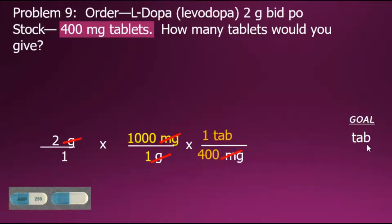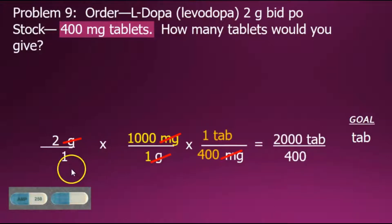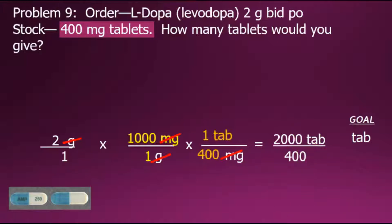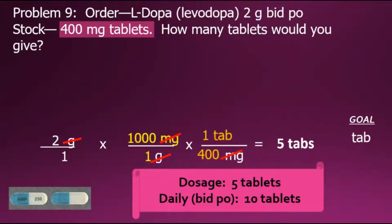Now we can do the indicated multiplication by multiplying the numerators of each fraction together for the new numerator, and the denominators together for the new denominator. To finalize our answer, we perform the division: 2,000 divided by 400 gives us a final answer of 5 tablets. This would be the amount for one dose. Because the problem gave us BID, meaning twice a day, the daily dosage would be a total of 10 tablets — or 2 times the per-dose amount — for our final answer.